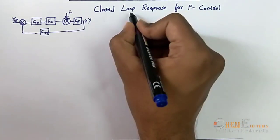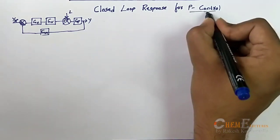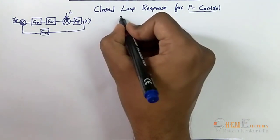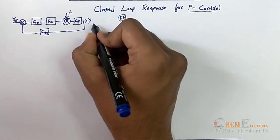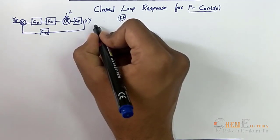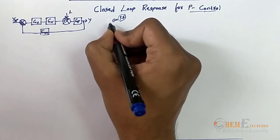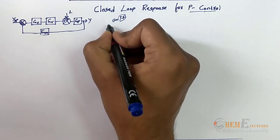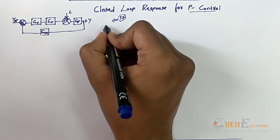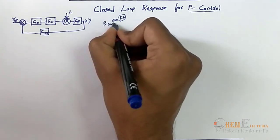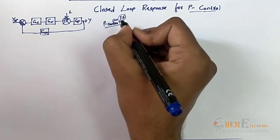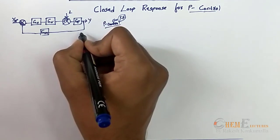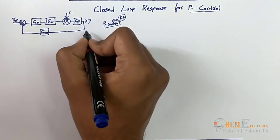In this video I will be discussing the closed loop response for a proportional controller. In the last video I discussed how to develop a transfer function for a closed loop response. Now we will see how a controller can affect the output of the response. In this lecture I will constrain myself to the P controller and see how it can affect the response of the closed loop system.